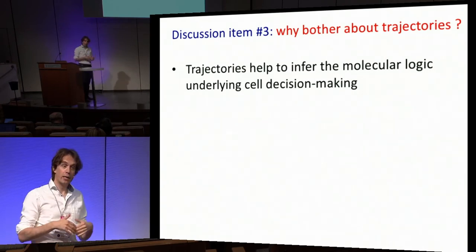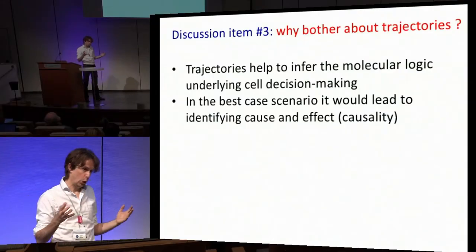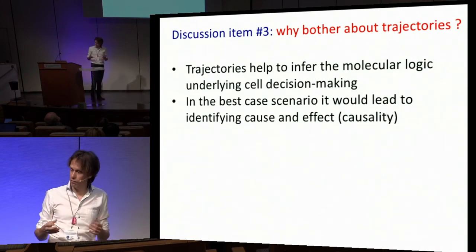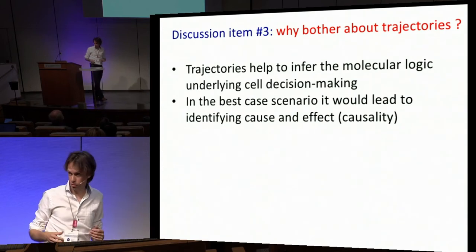Why do you care about all this heavy-duty computation on trajectories? The clusters are important, but if you know how to go from one to the other, you have at least candidates or a hint of how the molecular machinery is working — how it would switch on a certain pathway to go from A to B. It's basically trying to put in temporal information, and that helps you decipher the molecular logic. Ideally this will give you causality — if this gene goes up, then the cell goes from A to B, and this is how you learn how the biology works.